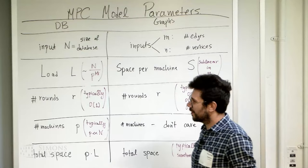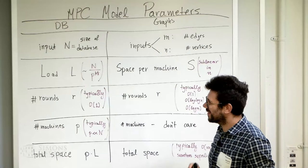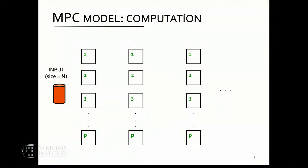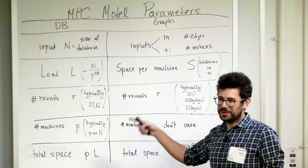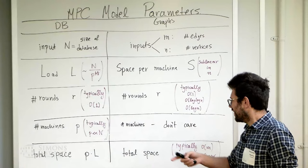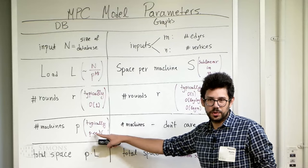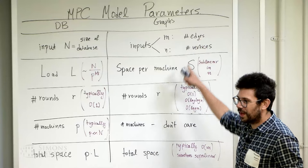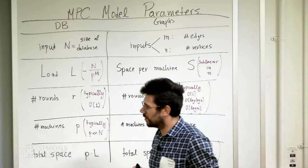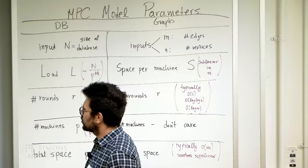The number of machines is an important parameter when designing algorithms, which is why we distinguish it. You have your input — your database — partitioned somehow initially. I'm going to use P for the number of machines. In the database setting we assume P is much much smaller than N. Your database could be terabytes or gigabytes; P is the number of machines, and even Google doesn't have more than maybe 10,000.